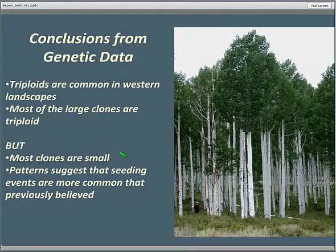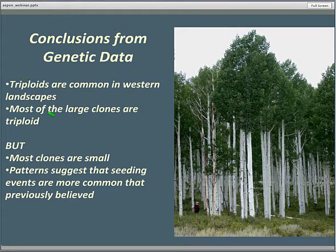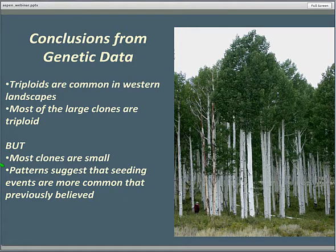A few conclusions from the genetic data: triploids are apparently common — maybe quite common — in many of these western landscapes. Most of the very large clones are triploid, but most of the clones are small, some very small, and the patterns suggest that seeding events are likely much more common than we once believed.